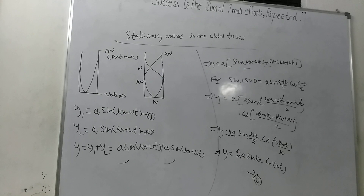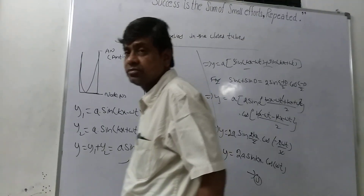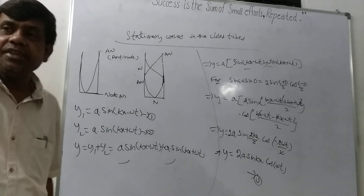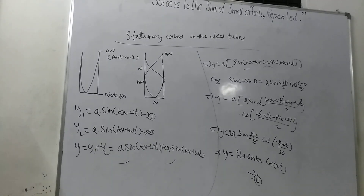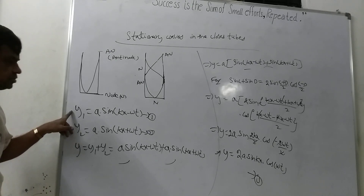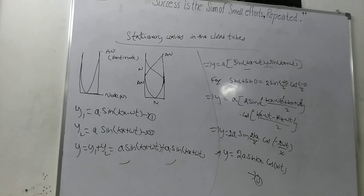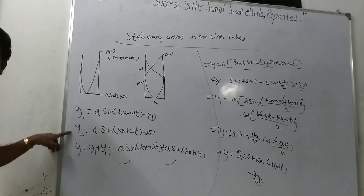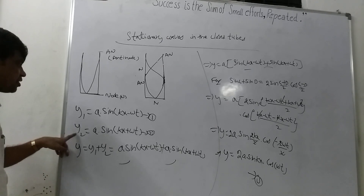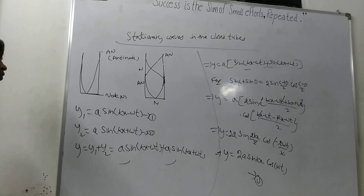I have shown you the figure. The incident wave equation is y1 equal to a into sin of kx minus omega t. The reflective wave equation is y2 equals to a into sin of kx plus omega t.